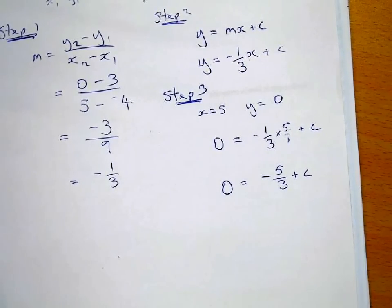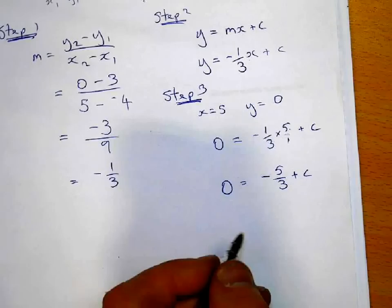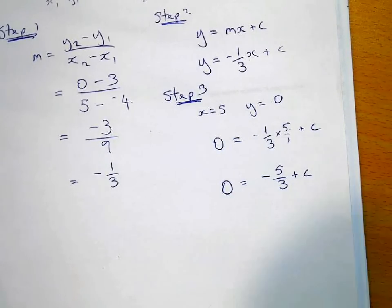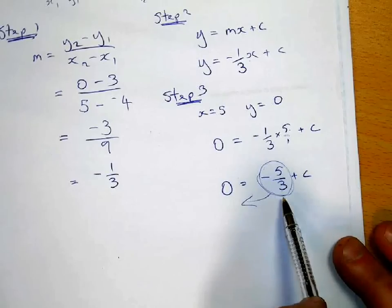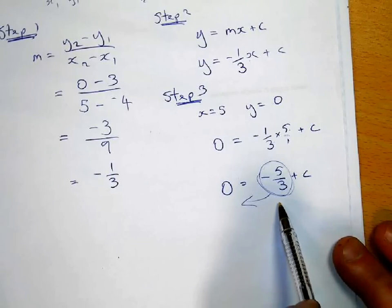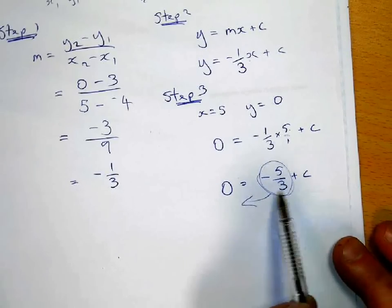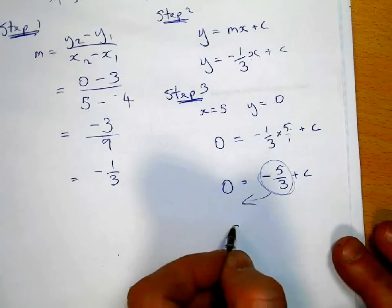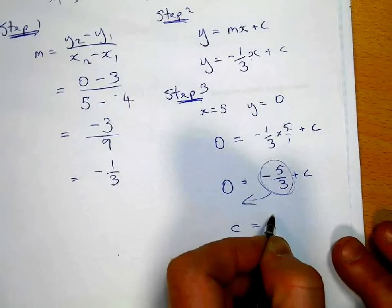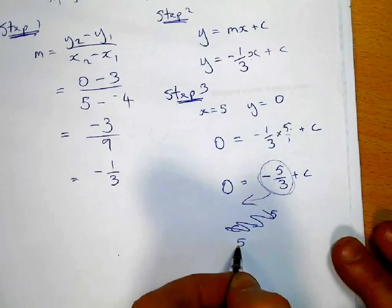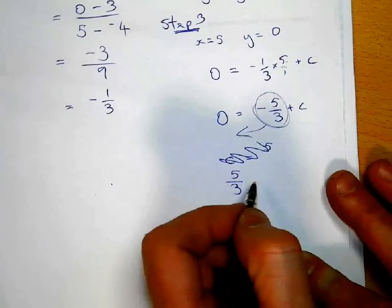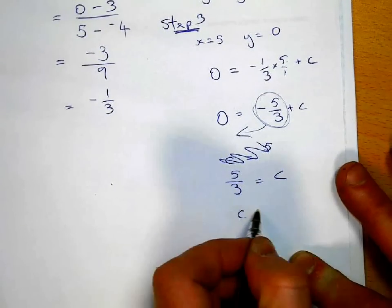Now, how can you solve that equation? Swap sides, swap sides. Do you want to work out what c is? So you put that on the other side. So that means c is going to equal, sorry, I should have written it the other way around actually. Bring that on the other side, you get 5 over 3 equals c, which means that c equals 5 over 3.